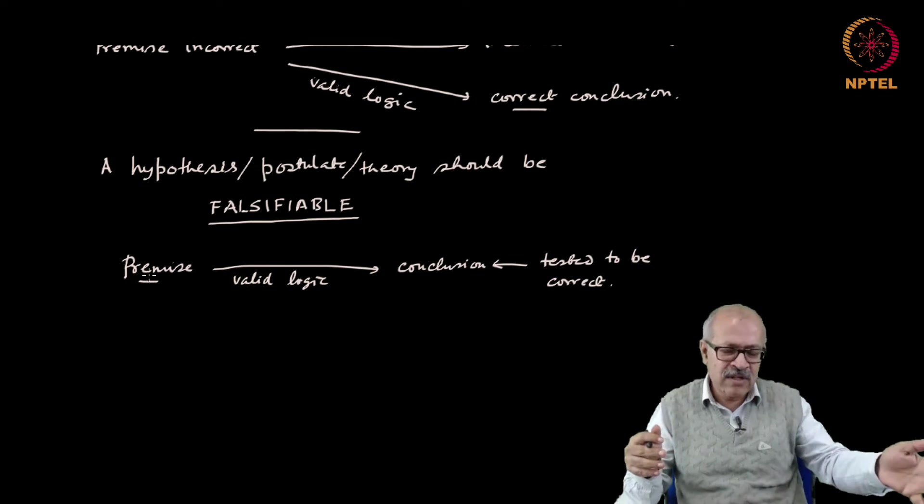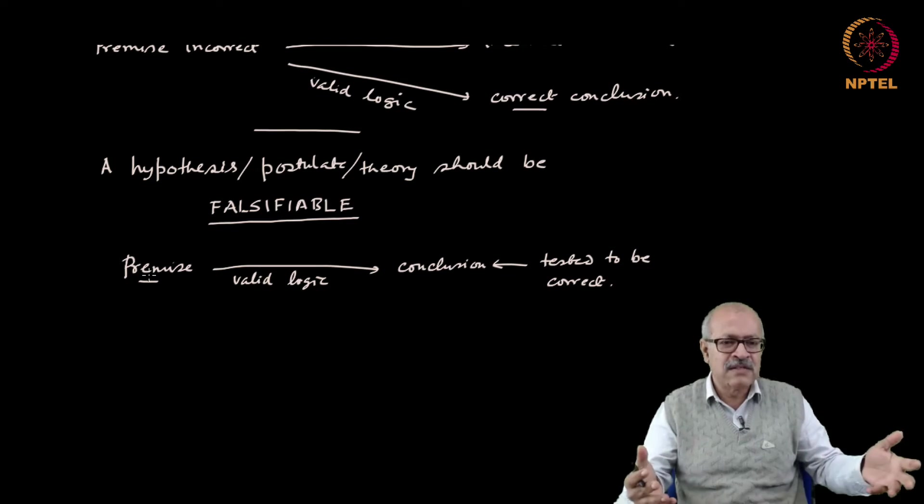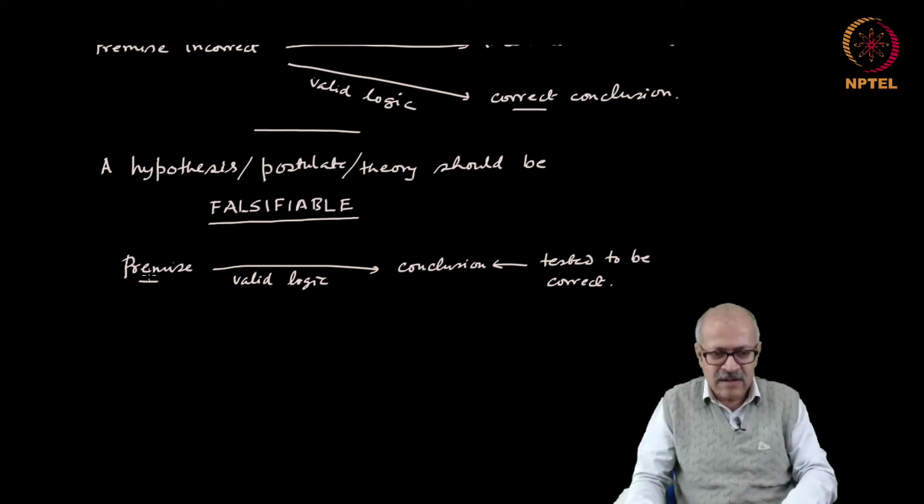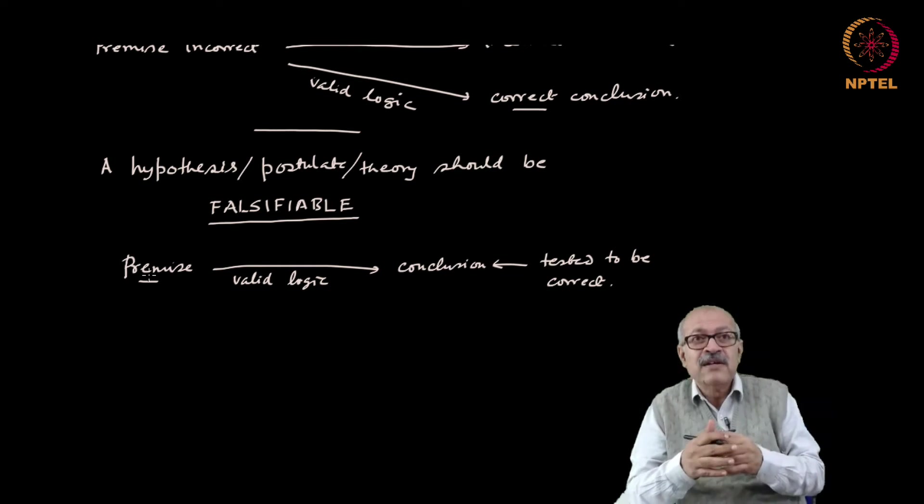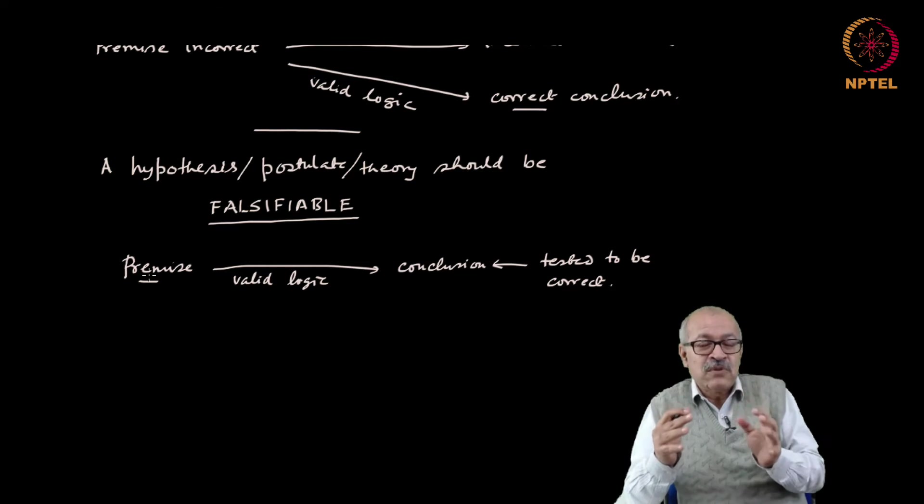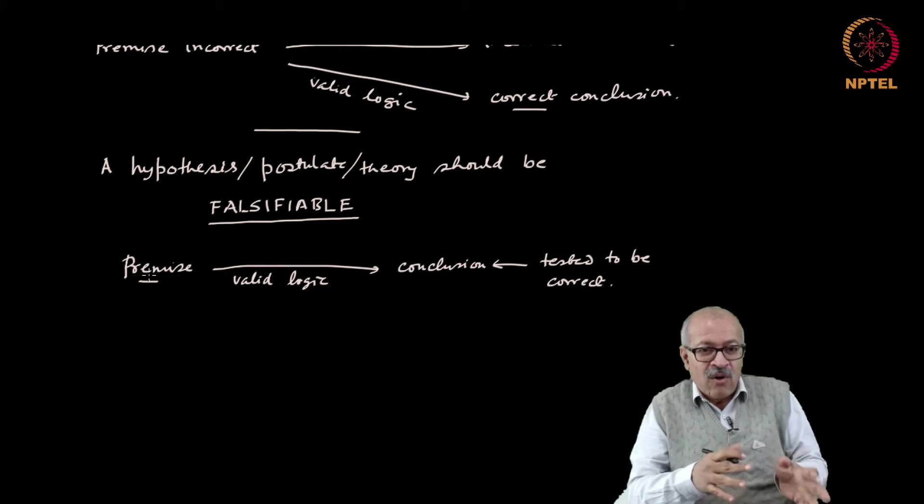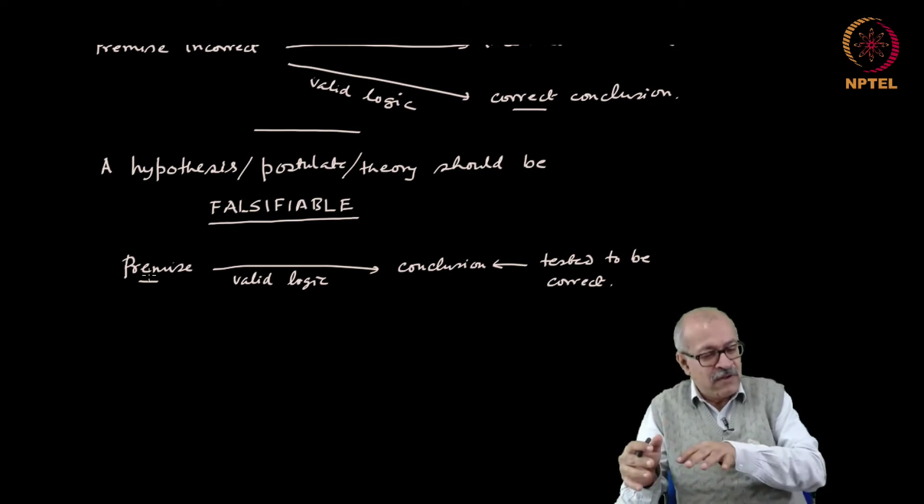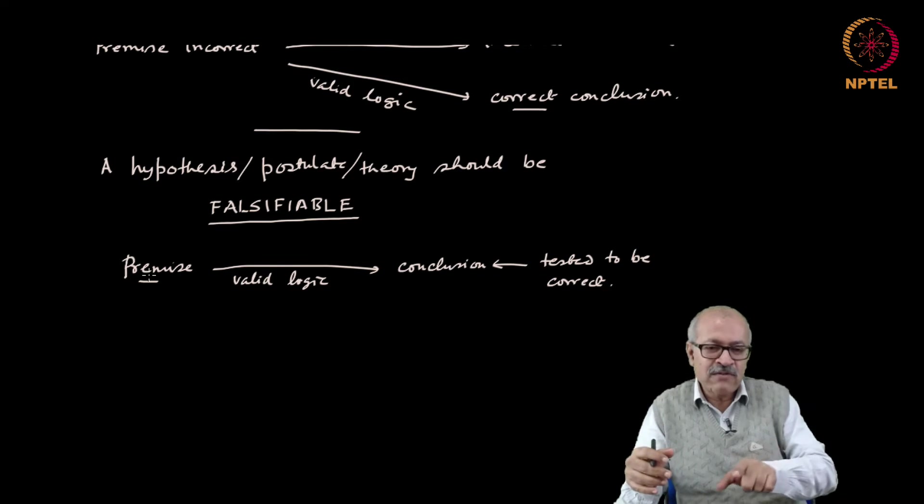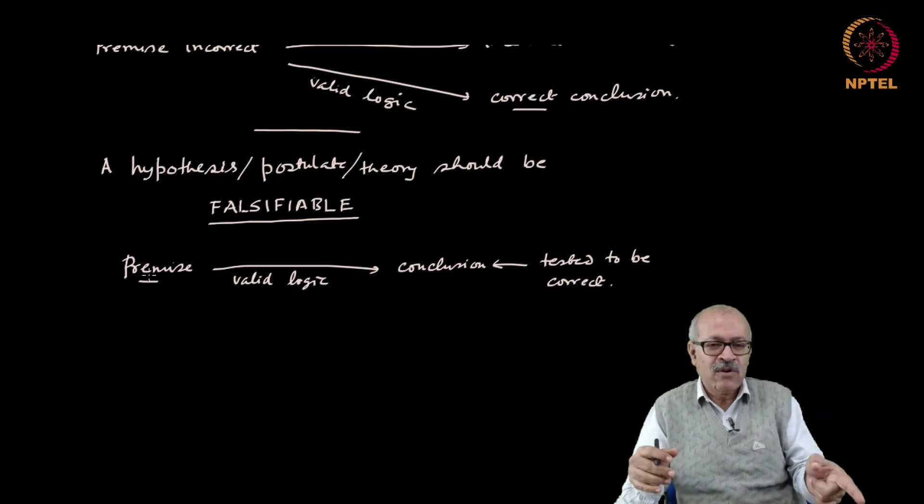Similarly, the steady state theory, those who proposed the steady state theory very clearly laid out what are the falsifiability criterion of their theory and so on and so forth. The lesson out of this is that whenever we propose a hypothesis or a postulate, we should always very clearly state what are the falsifiability criteria of the hypothesis or a postulate.